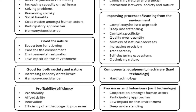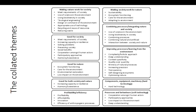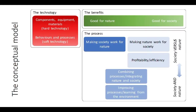This structure of nine groups kind of emerged by itself as we collated those bullet points together. We then produced a conceptual model, which is three mini conceptual models. One talks about the type of technology — hard or soft, meaning components and equipment or materials on a spectrum to behaviours and processes. The benefits were either good for nature or good for society along a spectrum. And the processes were on a scale from society versus nature, and then society and nature together.